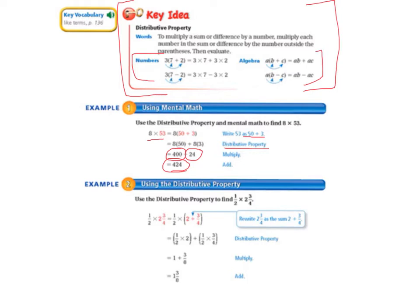Example 2, we use the distributive property to find 1 half times 2 and 3 fourths. Our first step is to write 2 and 3 fourths as the sum of 2 plus 3 fourths. When we write it using the distributive property, we have 1 half times 2 plus 1 half times 3 fourths. 1 half of 2 is 1 and 1 half of 3 fourths is 3 eighths. So we multiplied those and then when we add, we get 1 and 3 eighths.